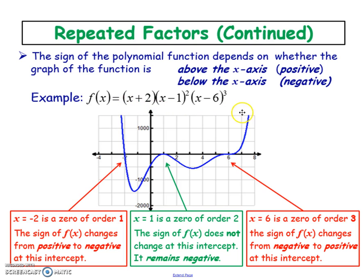It should point upwards, so both ends extend from quadrant 2 to quadrant 1 because the leading coefficient is a positive 1. Since the first and last x-intercepts are odd orders, the graph crosses the x-axis at those points, but because the middle x-intercept is an even order, it touches and then goes back in the same direction without crossing.